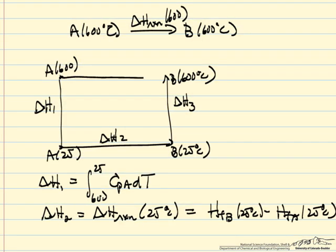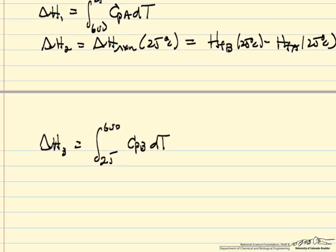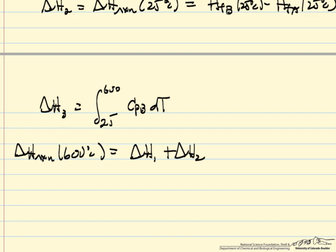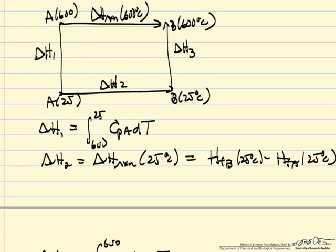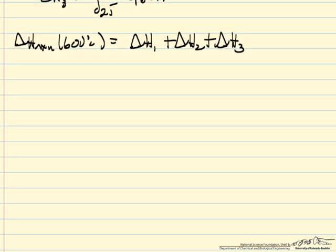And so then delta H for the reaction at 600 C, that's what we're interested in, is delta H1 plus delta H2 plus delta H3. And we pick this alternate pathway because we can find heat capacities for A, we can find the heat of reaction at 25 degrees C from tables, and we can find the heat capacity of B.